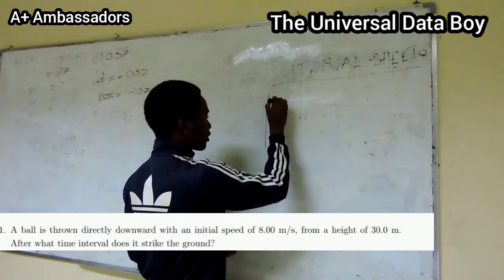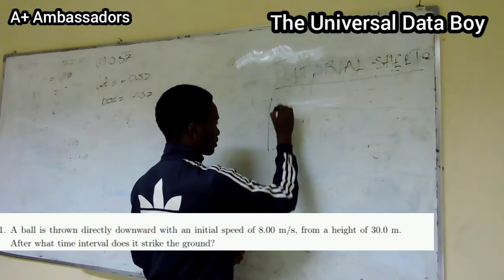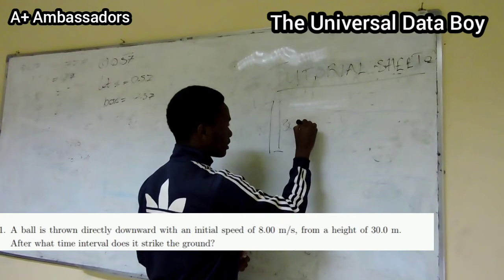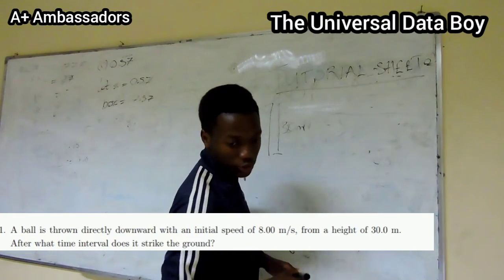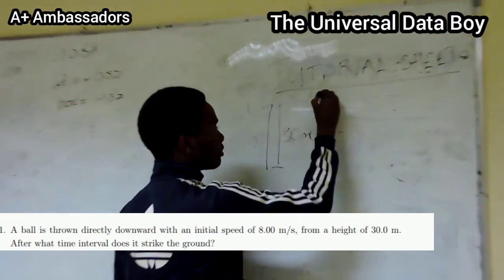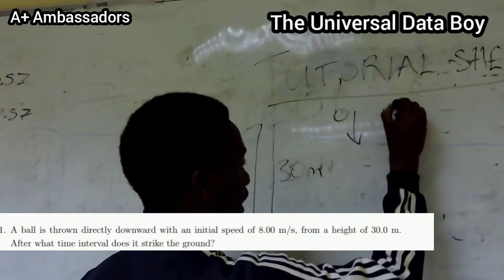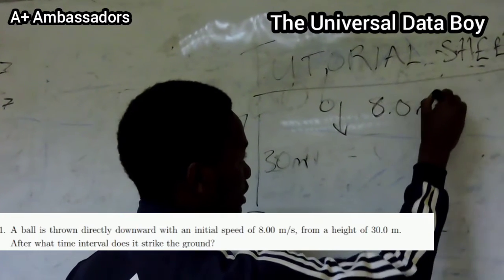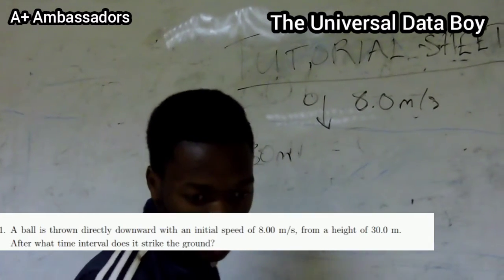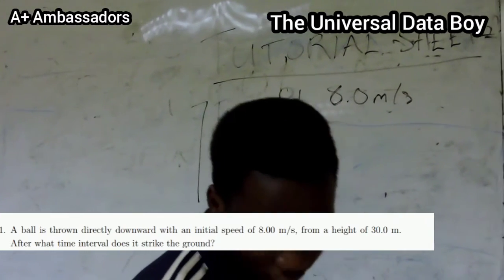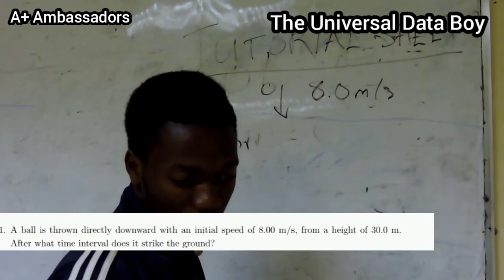So we have a height that's 30 meters, and then a ball is thrown with a speed of 8.0 meters per second. We are being asked after what time interval does it strike the ground?